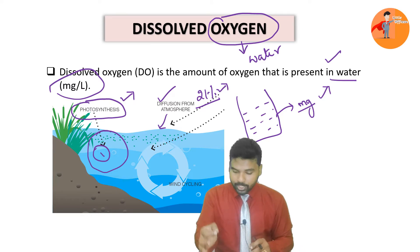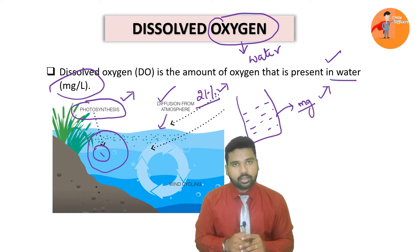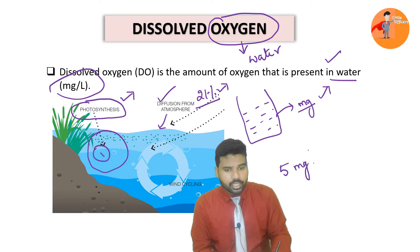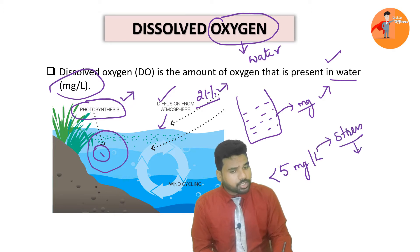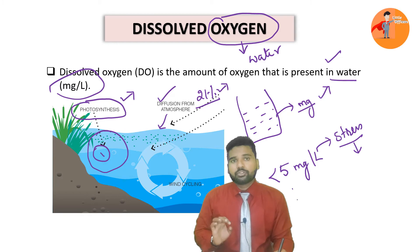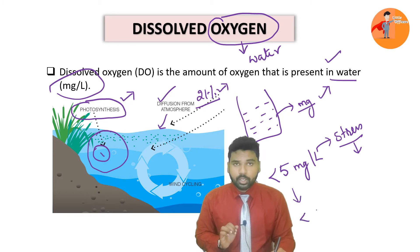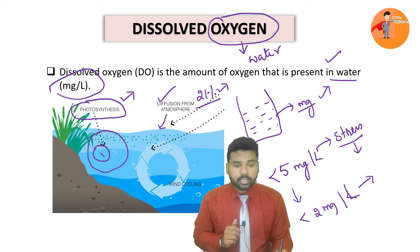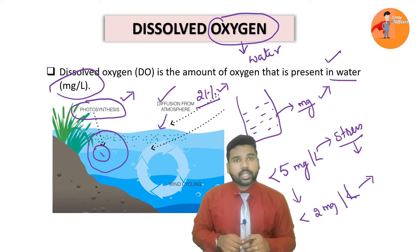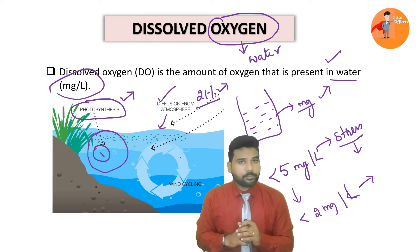Now depending upon this dissolved oxygen content, we say whether a particular water body is pure or polluted. If the dissolved oxygen content is less than 5 milligrams per liter, we say that particular water is stressed and whatever organisms are present in that water are feeling the heat of this lack of oxygen. If it goes even below that and the dissolved oxygen content is less than 2 milligrams per liter, then that water is not inhabitable for organisms and whatever aquatic organisms are there might die.